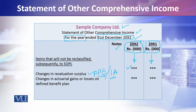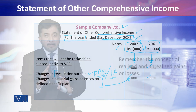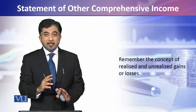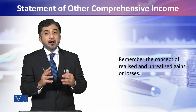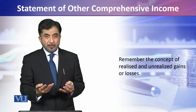This revaluation surplus is for property, plant and equipment, or intangible assets, and the comparative — obviously last year's figure — is given. Changes in actuarial gains or losses on defined benefit plan is not in your syllabus; I have noted it here from a completion point of view. I would say don't bother with that — focus on understanding revaluation surplus. This revaluation surplus is what you need to present here in the statement of other comprehensive income — these are unrealized gains.